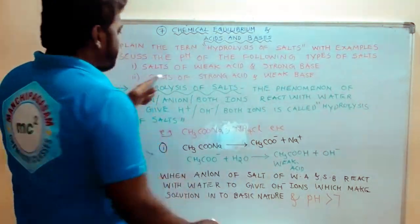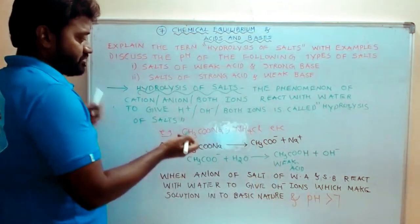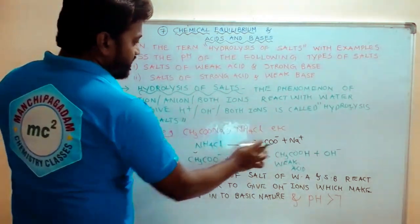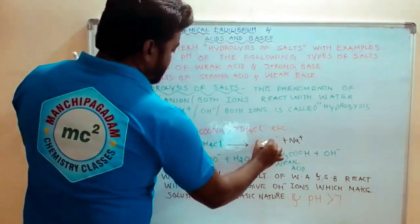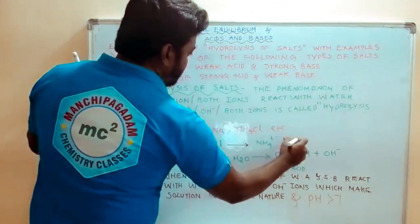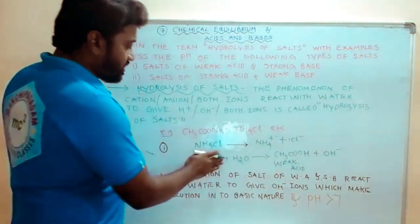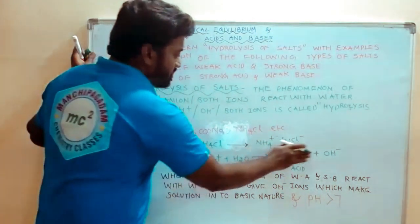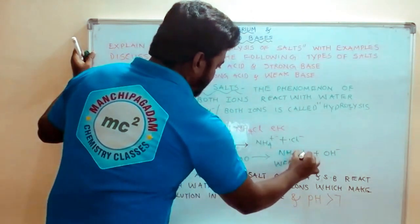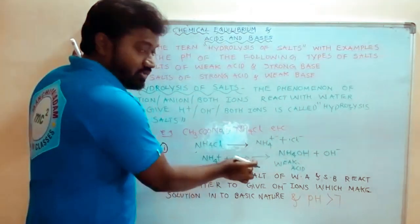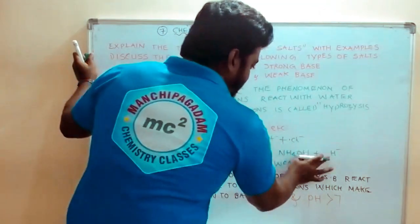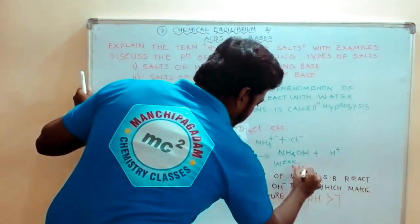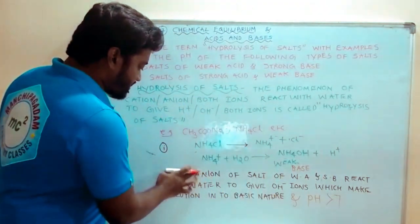Example is NH4Cl. NH4Cl gives NH4+. NH4+ comes from NH4OH which is weak base. This produces H+ ions which makes the solution acidic nature.